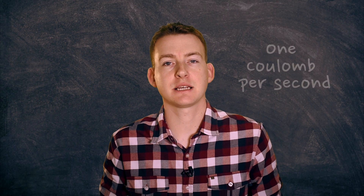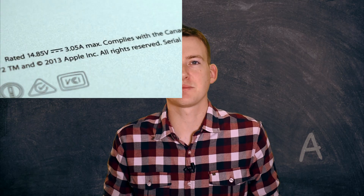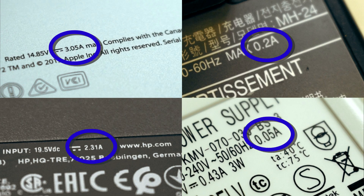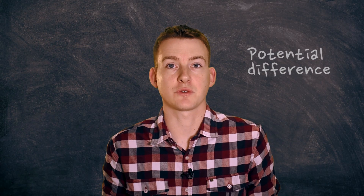One coulomb per second is one ampere. We don't usually say amperes — it's more common to say amps, and it's given the symbol A. We can see this symbol represented on a whole host of electrical devices. When thinking about electricity it's not enough only to think about the number of coulombs flowing in any unit of time. We also need to think about the amount of work that each coulomb can do. This is the idea of potential difference or voltage, and that's in the next video.